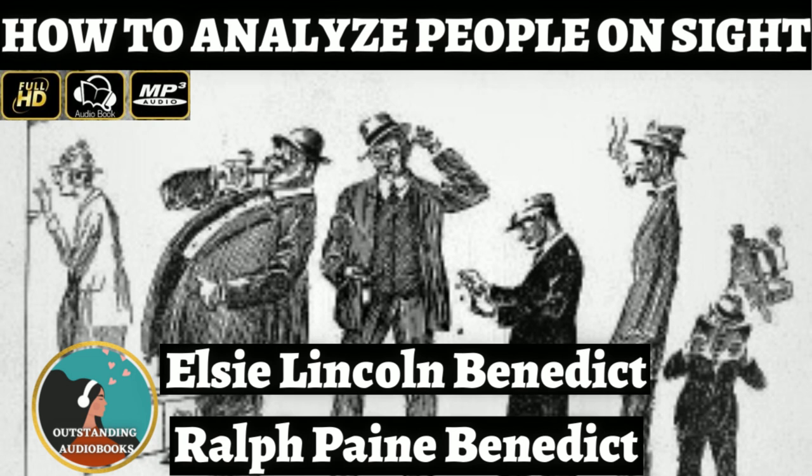Human analysis differs from every other system of character analysis in that it classifies man for the first time into five types according to his biological evolution. It deals with man in the light of the most recent scientific discoveries. It estimates each individual according to his human qualities rather than his so-called moral qualities — taking his measure as a human being and determining from his externals his chances for success in the world of today. Every rule in this book is based on scientific data and has been proved accurate by investigation and surveys of all kinds of people in all parts of the world.